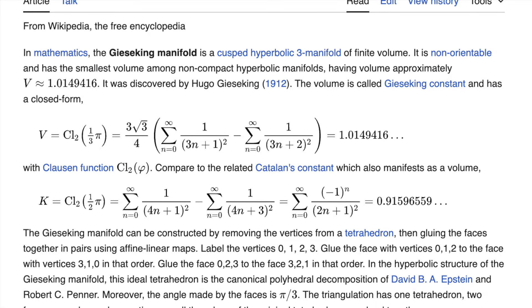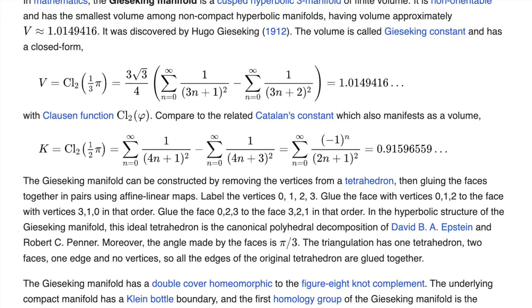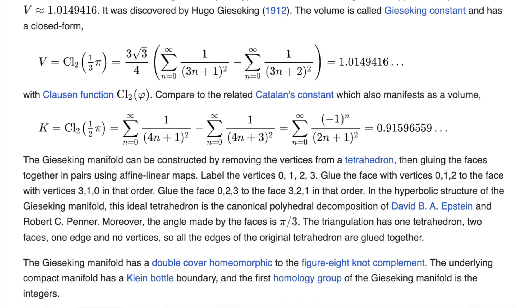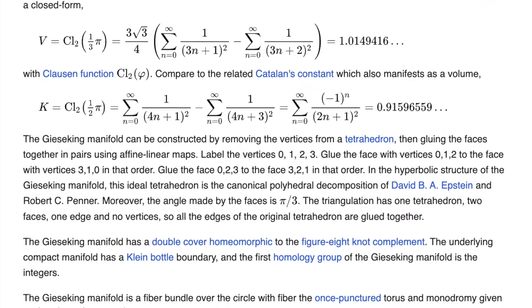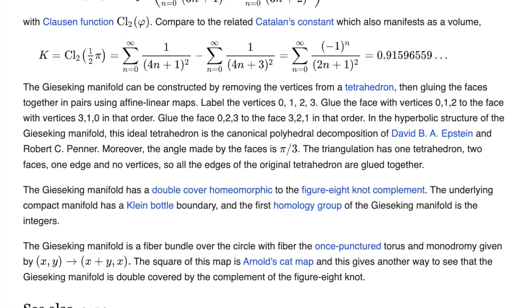It's not until you double-walled it, double-covered it, that it would become stabilized and wouldn't just dissipate immediately after forming it. So in order to stabilize it, you'd have to double up on it. And when we double-cover the Gieske manifold, we get exactly the hyperbolic figure eight knot.